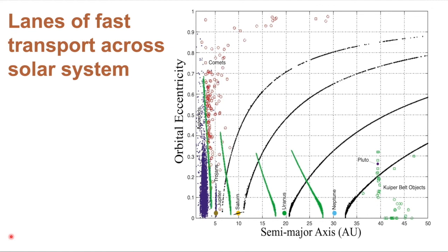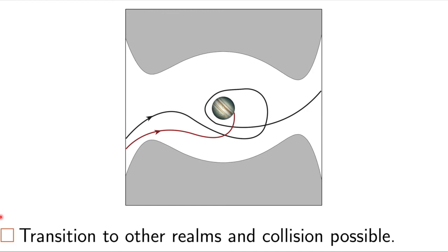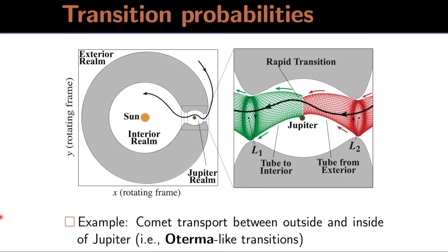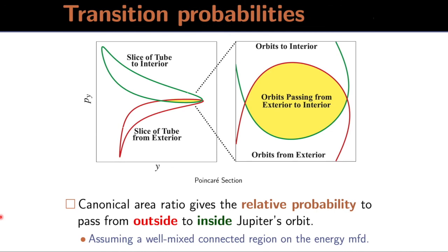The details of how transport occurs between realms and even collision can be related to these phase-volume calculations of probability. So if we were to look at an Oterma-like transition, we would consider the tubes related to that, and then calculate the ratio of the intersection area, shown here in yellow, with the direction, whether from the interior or exterior, of Jupiter's orbit. And of course we're making a well-mixed assumption, similar to what's done in chemistry.